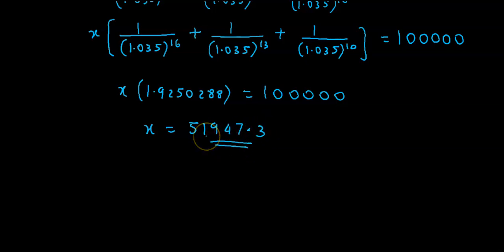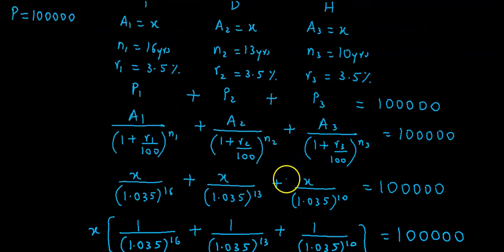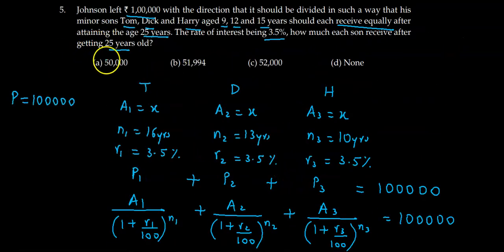So this approximate value is 51,947. Looking at the options, 51,947 is not there, 51,994 is there. So no option is close to 51,947, therefore the correct answer is option D.